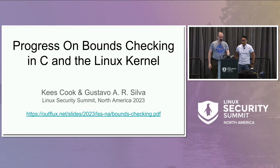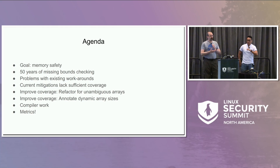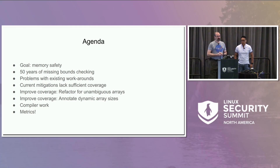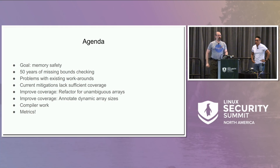Just a quick agenda of what we're talking about. Our goal is memory safety. We're going to look at the 50 years of history of C and its missing bounds checking, problems with the existing workarounds, where the current mitigations are and why they lack coverage, what we've done to improve coverage with refactoring and annotation, the compiler work we've got, and some numbers at the end.